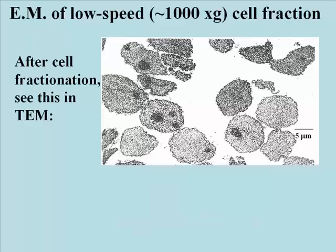Because the nucleus is the largest structure in a cell, you'd predict that it would sediment or pellet during low-speed centrifugation. This is a TEM of isolated nuclei. We believe that these are nuclei because they look like nuclei and they're about the same size as nuclei that we see in situ.